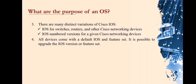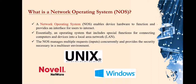It is downloadable on the internet. Those are the four purposes of an operating system. We will now focus our discussion on network operating system. A network operating system enables devices or device hardware to function and provides an interface for users to interact. Examples of network operating systems include Netware, Unix, Windows, and IOS.